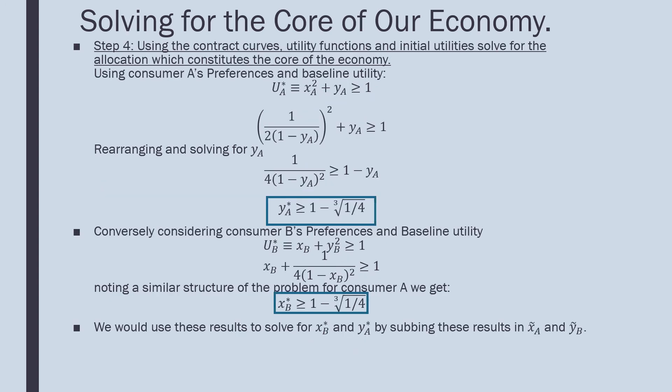Moving on to step four: using the contract curves, utility functions, and initial utilities, we solve for the allocation which constitutes the core of the economy. We say that U_A at its optimum must be at least as good as the initial allocation. That's where the core must lie.